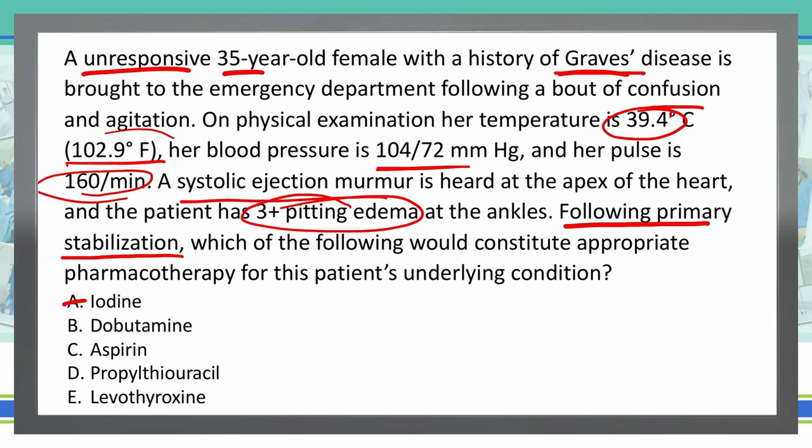B: Dobutamine. Dobutamine doesn't work here because it would make things worse by exacerbating the adrenergic effects, causing negative problems in the heart. Something we would want to use is the opposite — we don't want a beta agonist, we would want a beta antagonist. So dobutamine is working in the opposite direction of what I want.